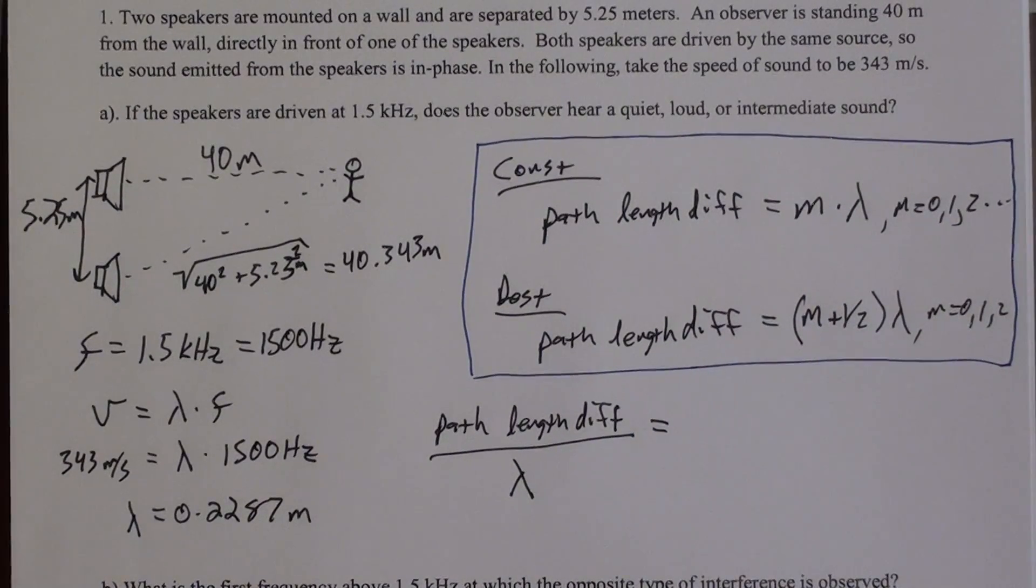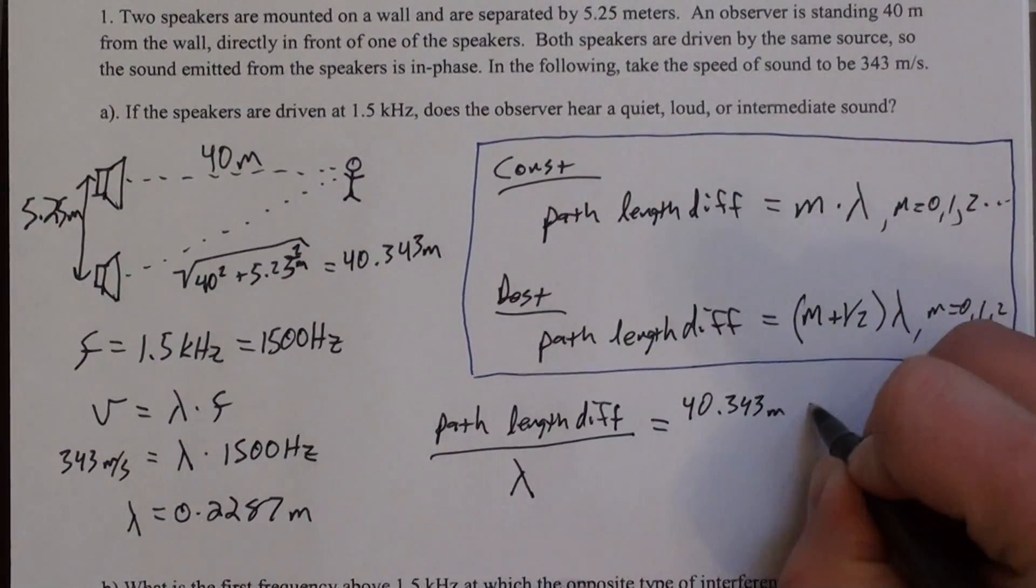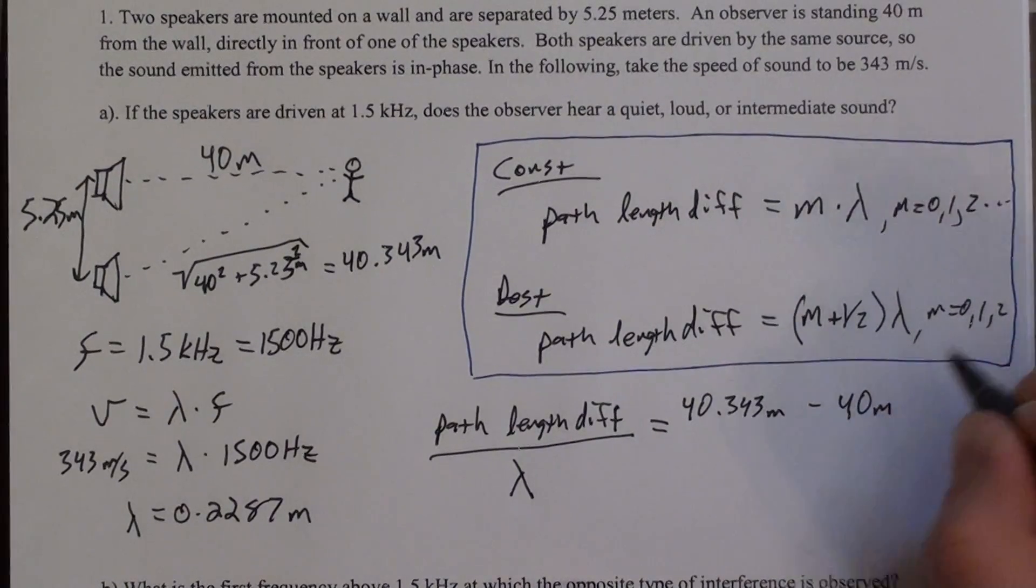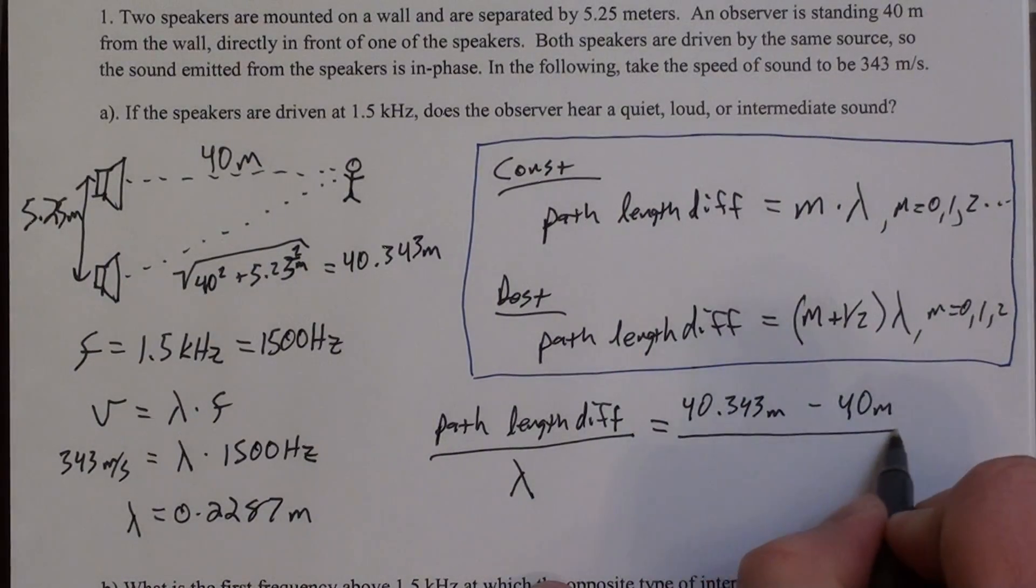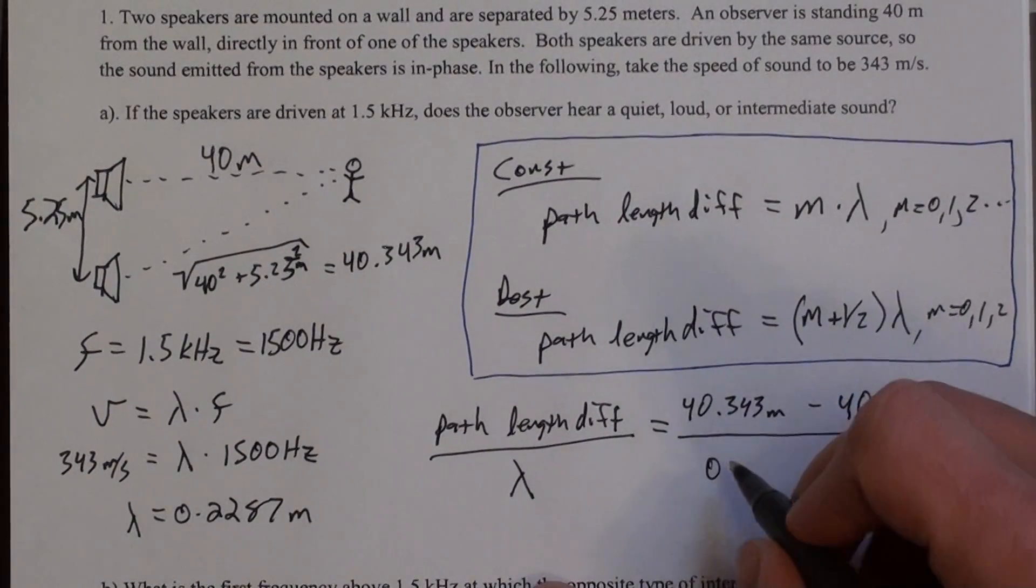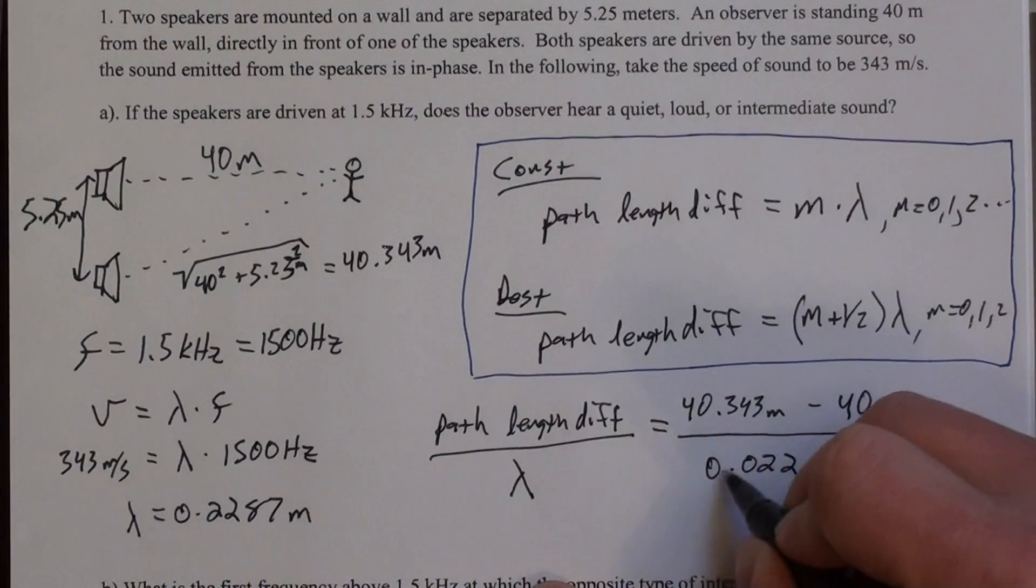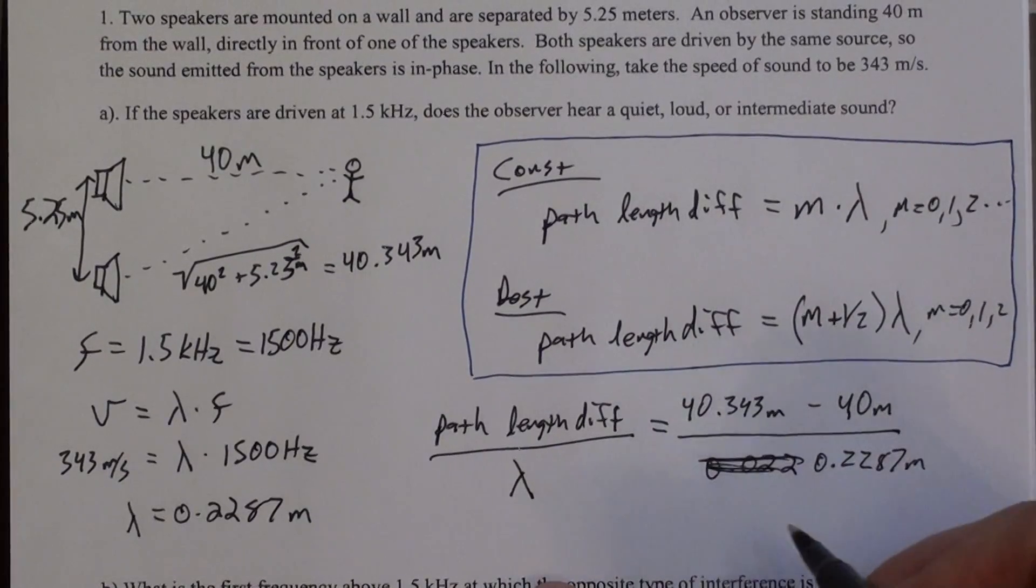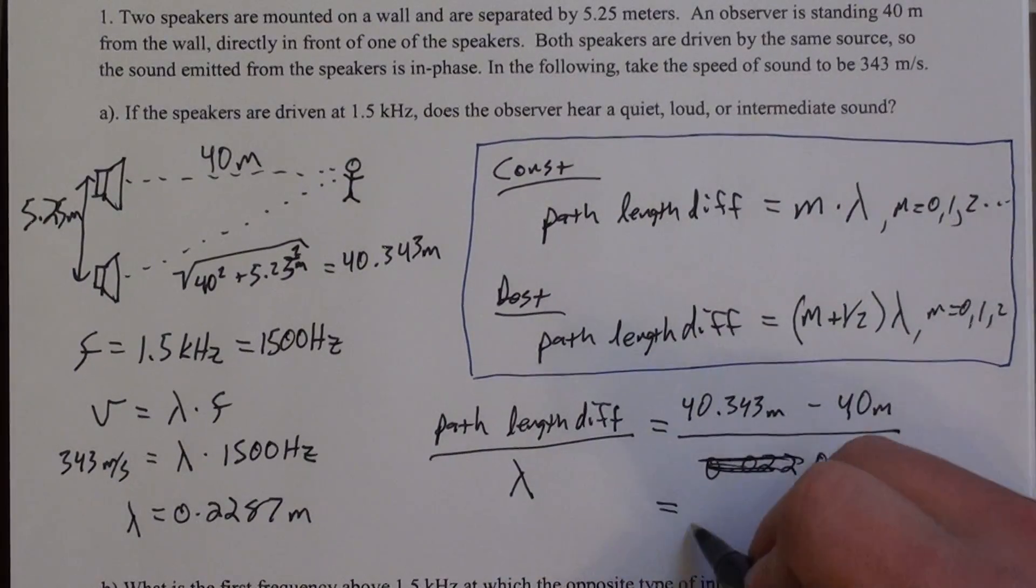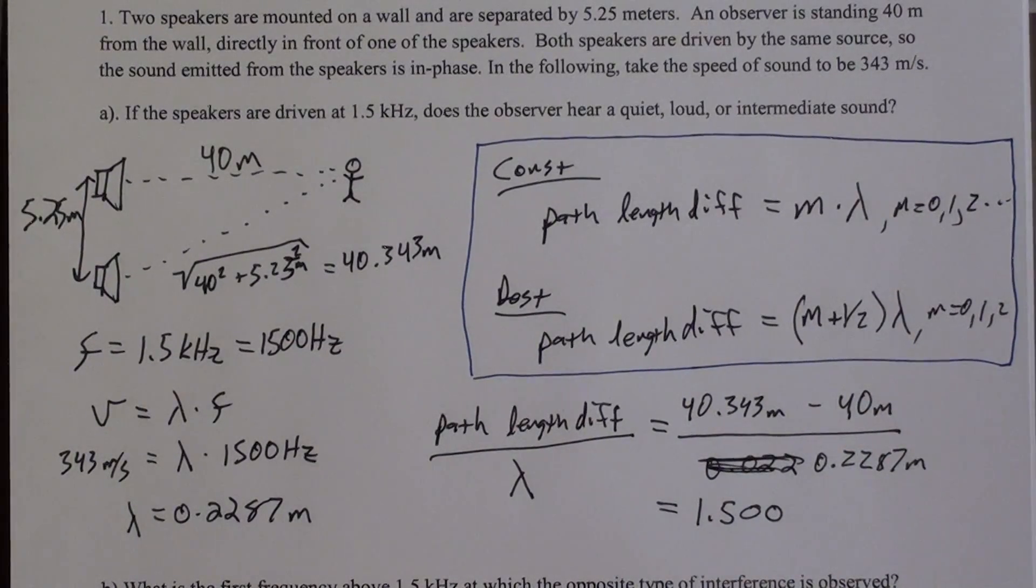So here's my test. Is the path length difference divided by lambda? So I can plug those numbers in here. The path length difference will be the difference between 40.343 and 40, right? This is just the extra distance that the bottom wave has to travel. So I'm dividing that by the wavelength, which is 0.2287 meters. And that gives you 1.50.